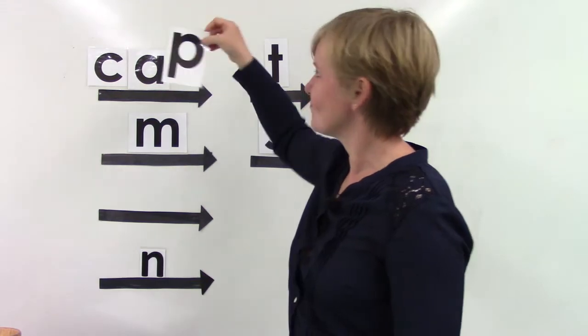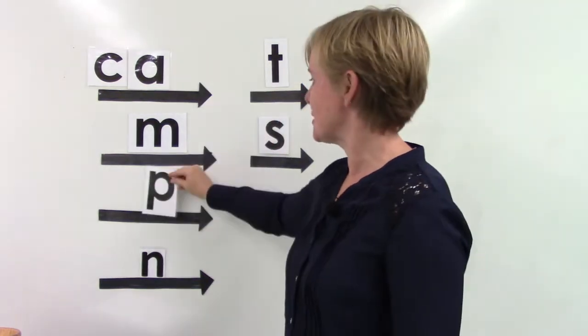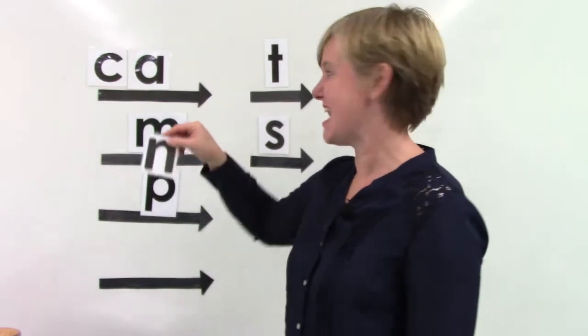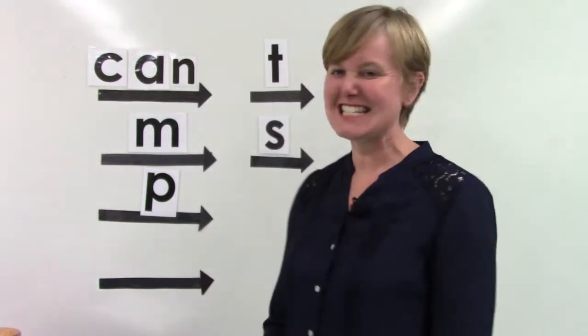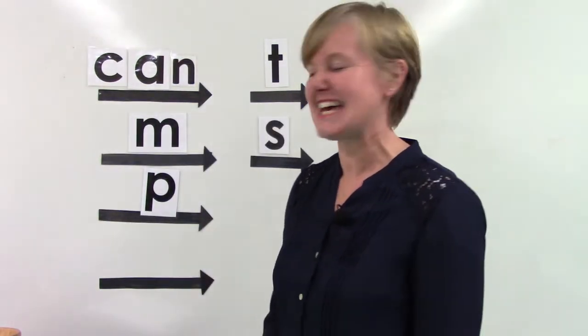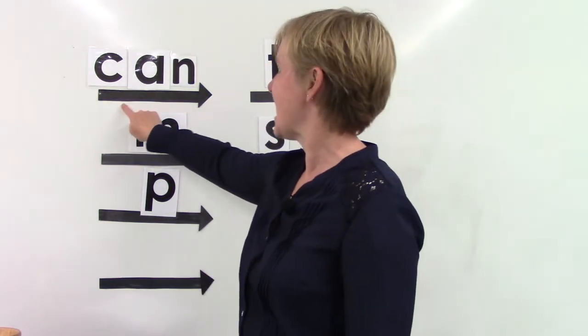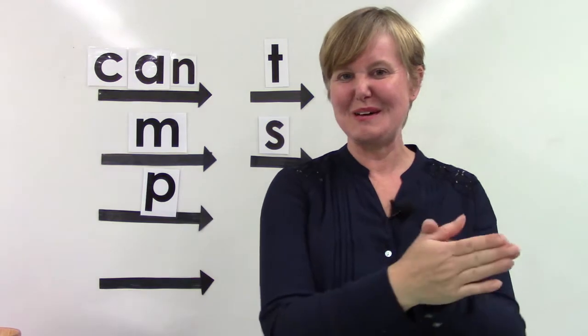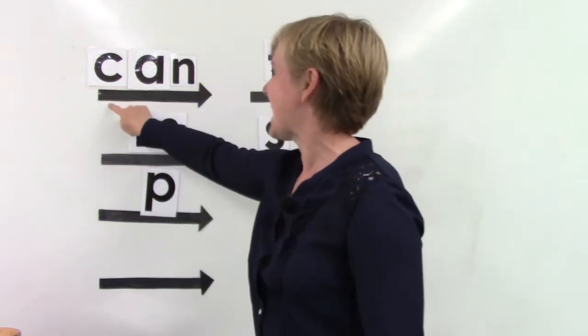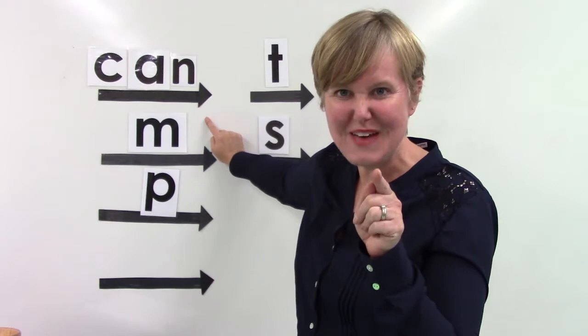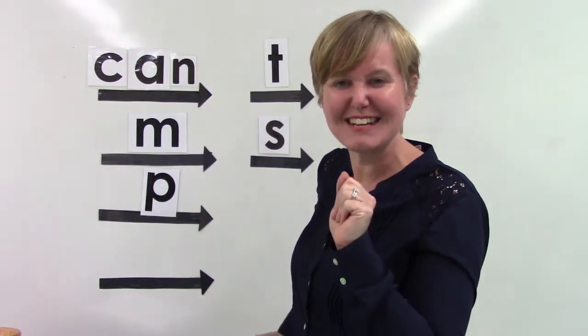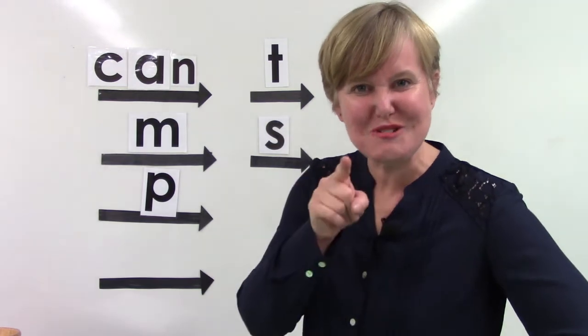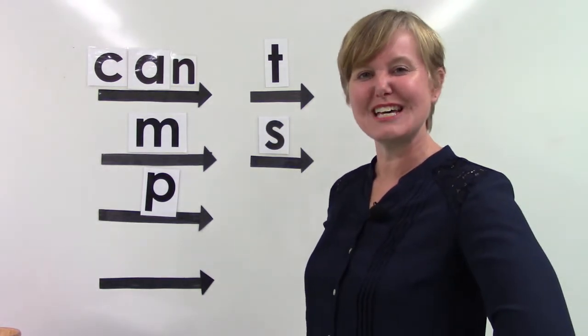I'm gonna change the P and put on a N. All right, let's say these sounds together. C, A, N. Blend them slowly. Can. Say it fast. Can. Well done. I know that you can. You can do this.